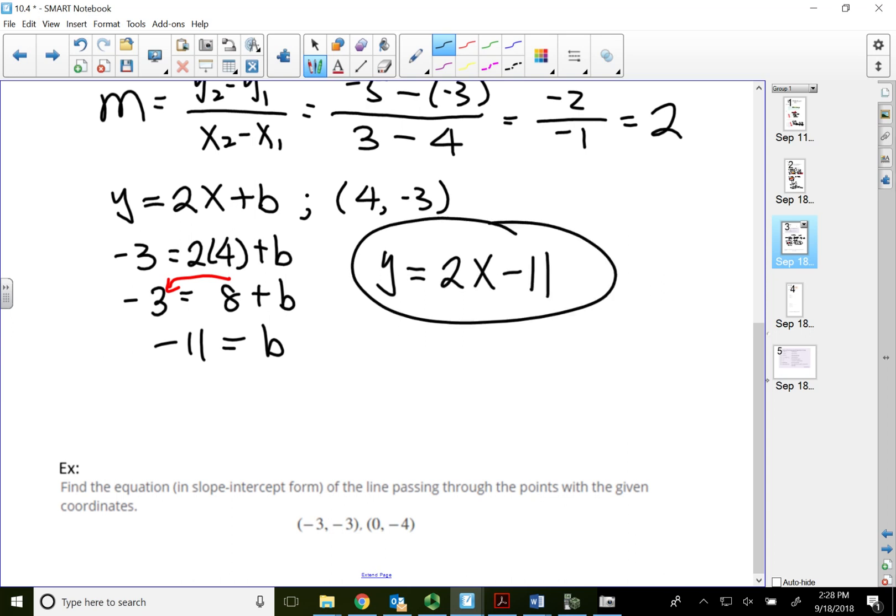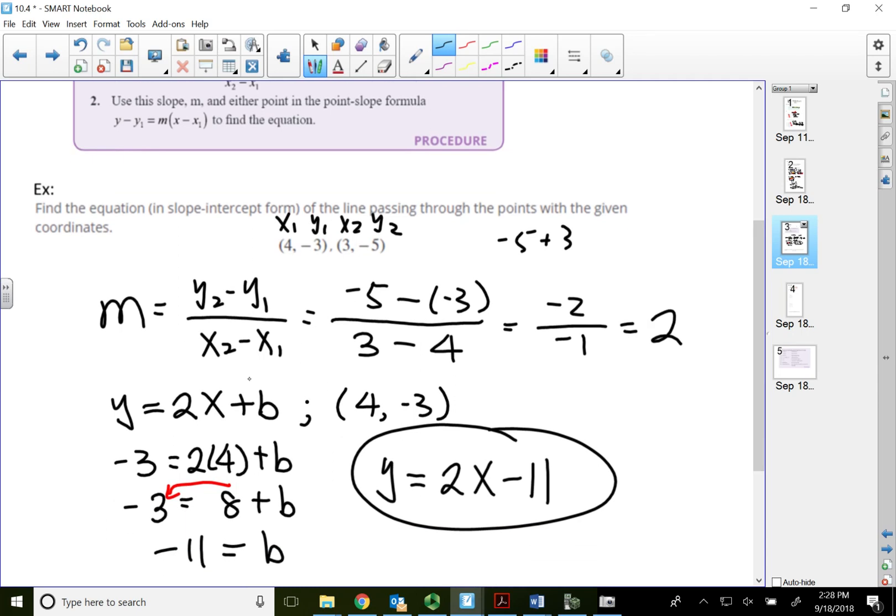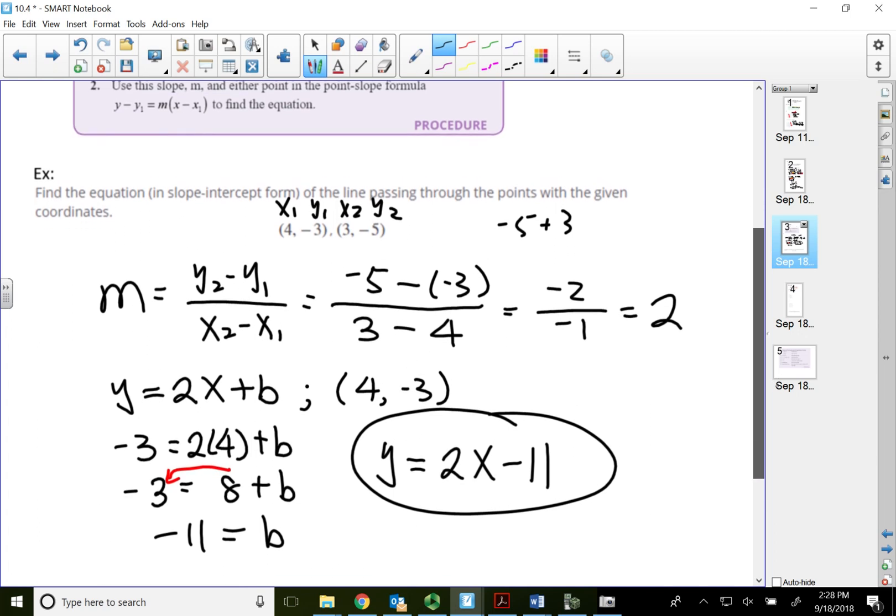Now, the reason why I'm not using the point-slope form is because most of the time I need to write my answer in slope-intercept form. So to me, it just seems quicker to just use a slope-intercept form to write the equation. Even when it gives me two points. To me, this seems a little bit quicker.